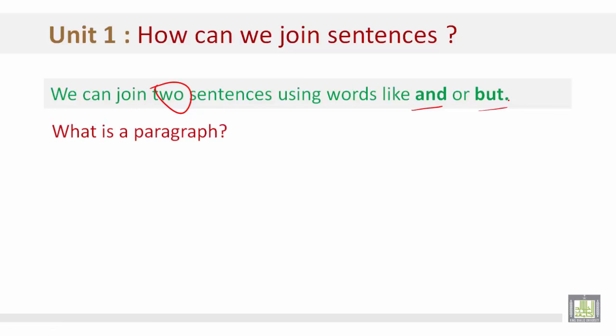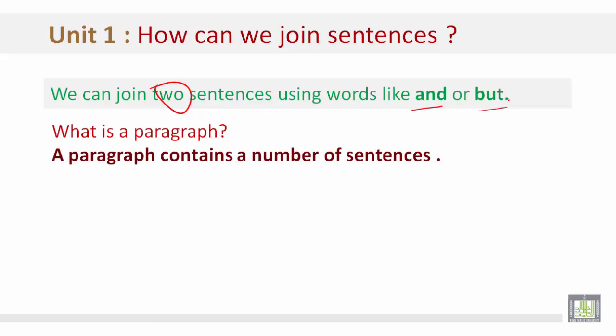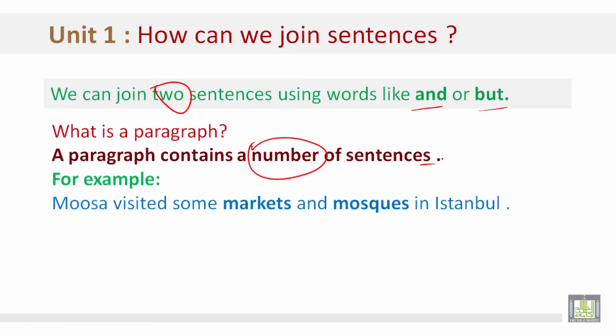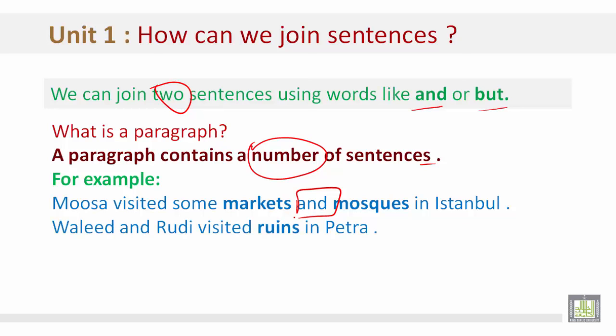What is a guided paragraph? It is a paragraph which contains a number of sentences. It is very important to note that a paragraph contains more than one sentence. For example, 'Musa visited some markets and mosques in Istanbul.' Here we see the conjunction 'and' joining two ideas in a sentence. We also have 'Walid and Rudy visited the ruins in Petra.' Here we have 'and' joining Walid and Rudy.